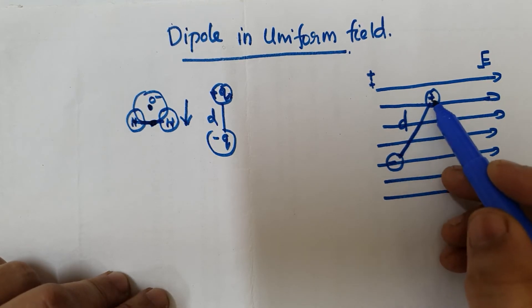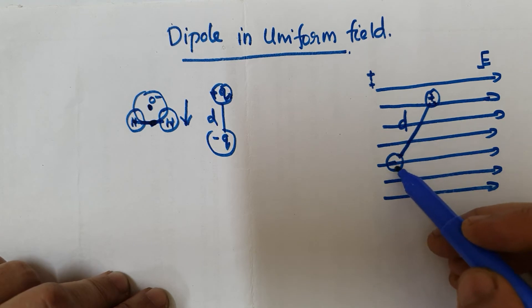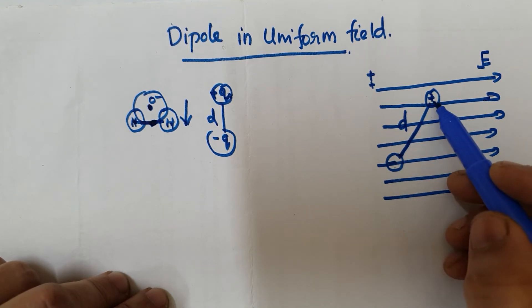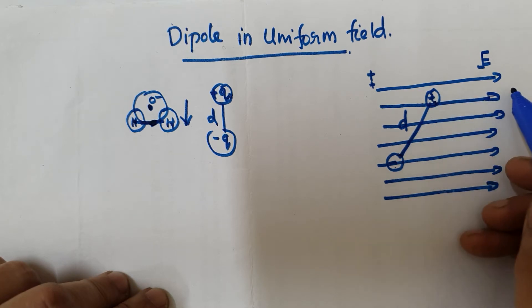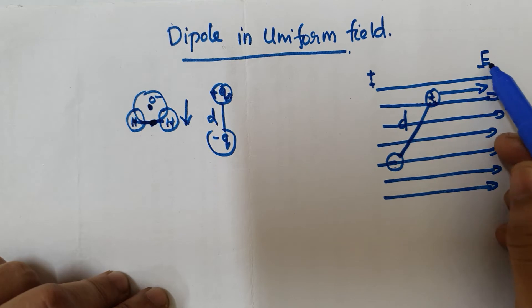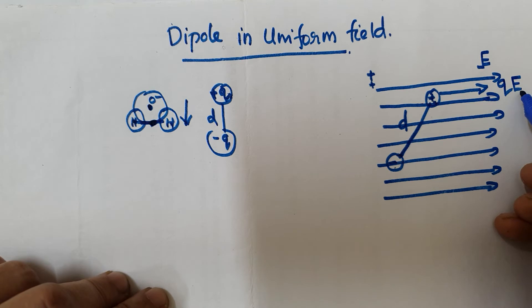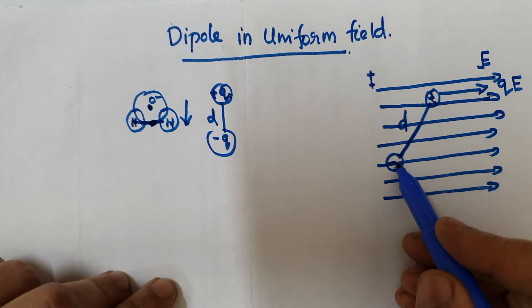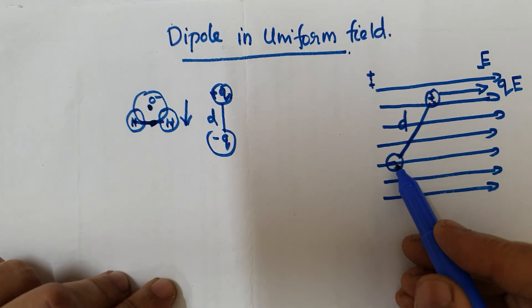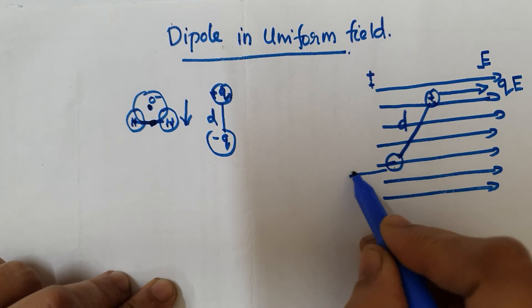The dipole has two equal charges, plus q and minus q. The plus q experiences a force along the direction of the electric field, with magnitude qE. The minus q experiences a force in the opposite direction, also of magnitude qE, because of the applied field.